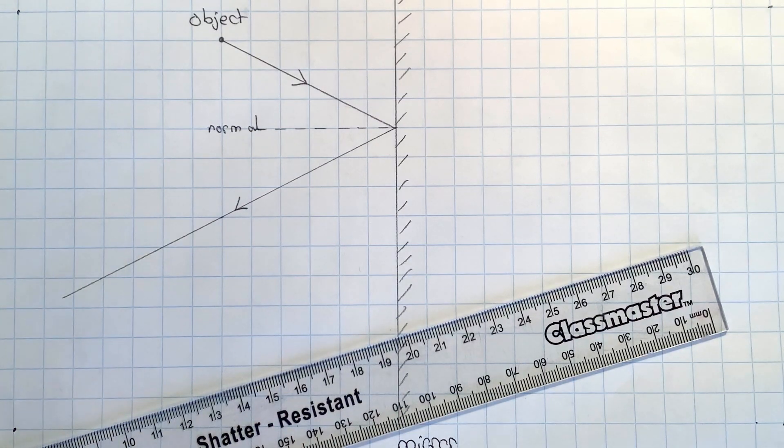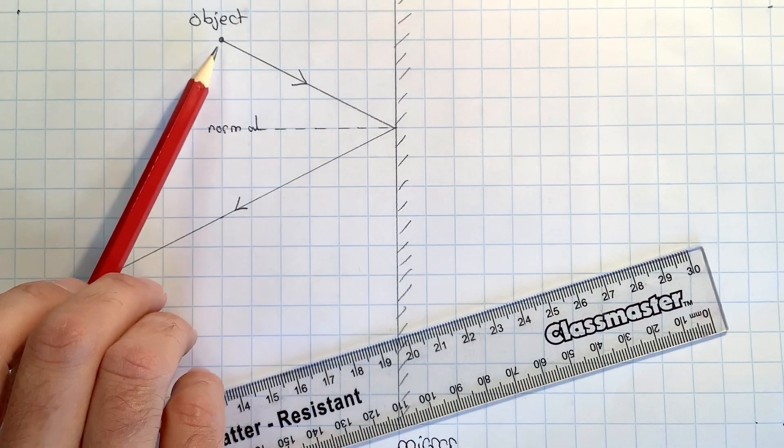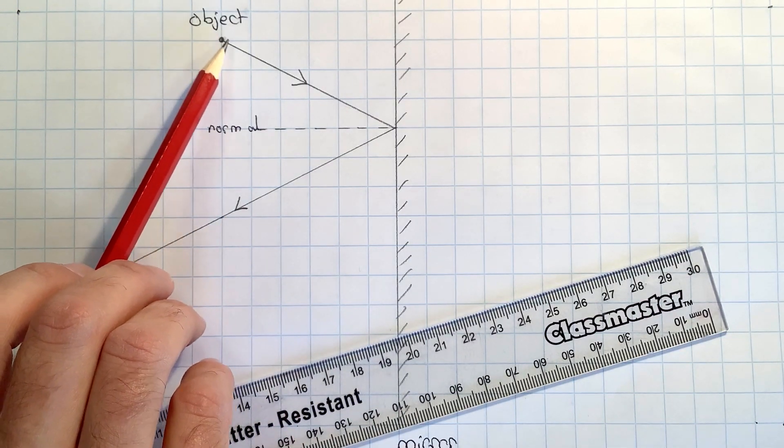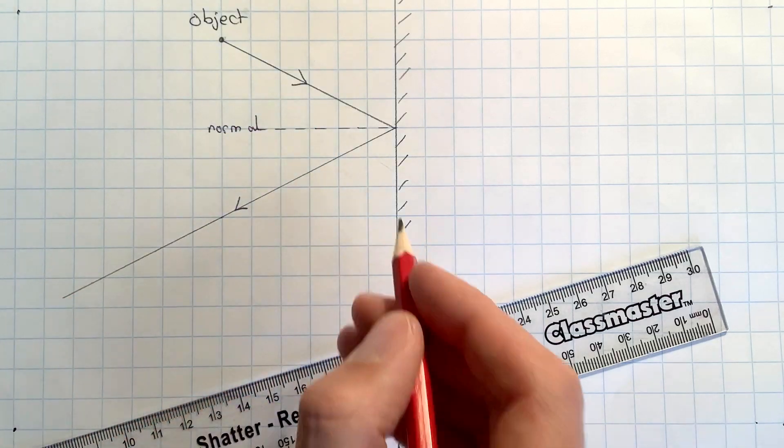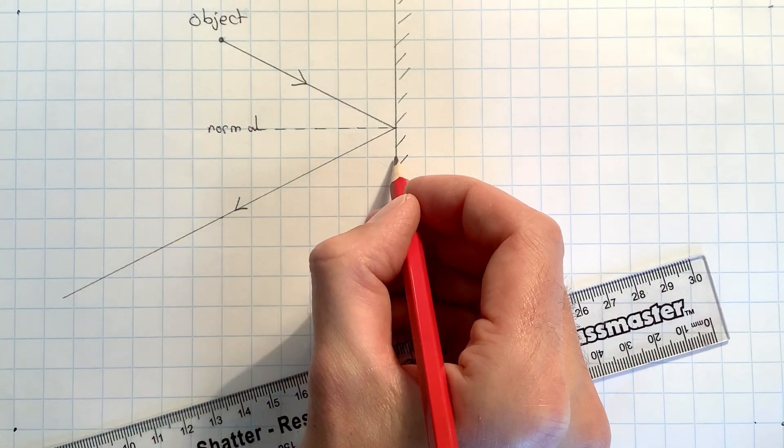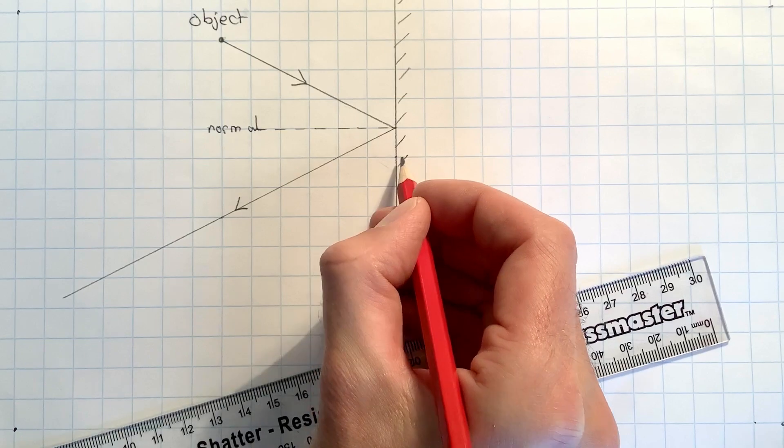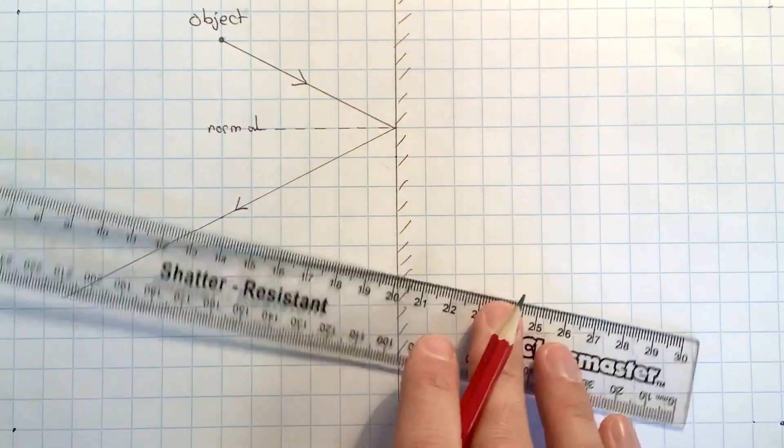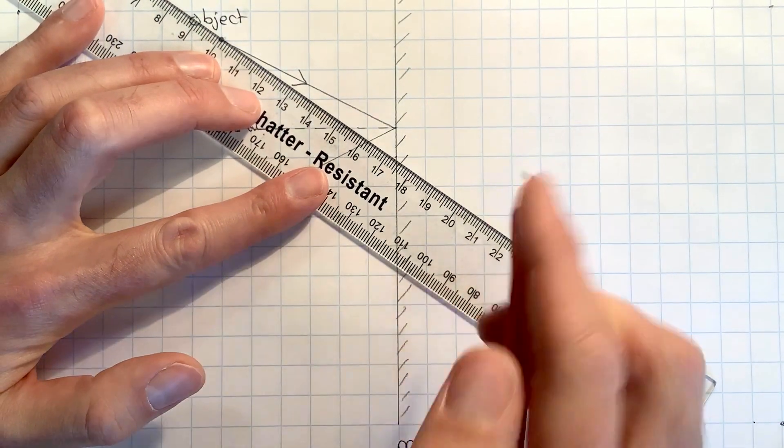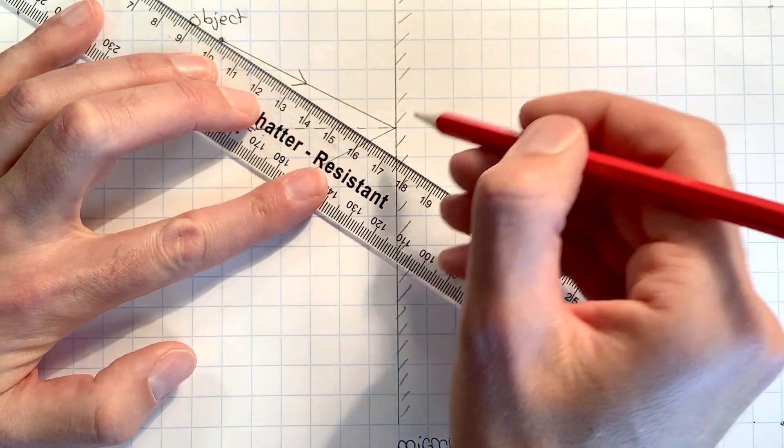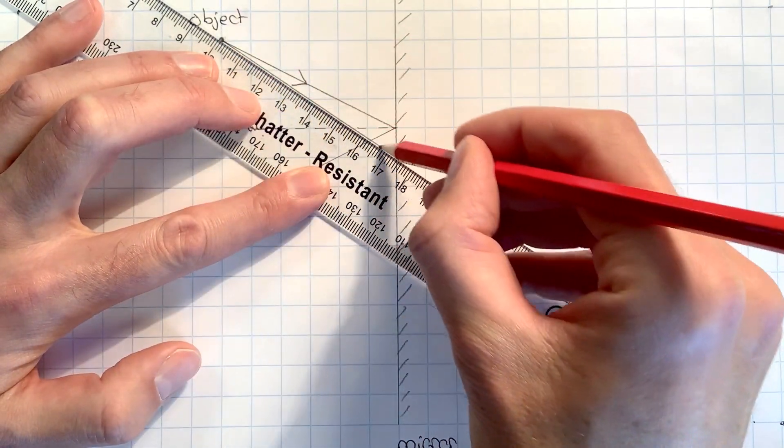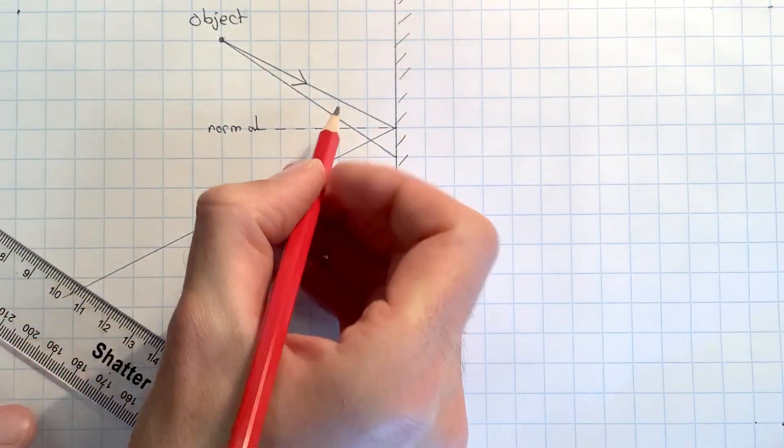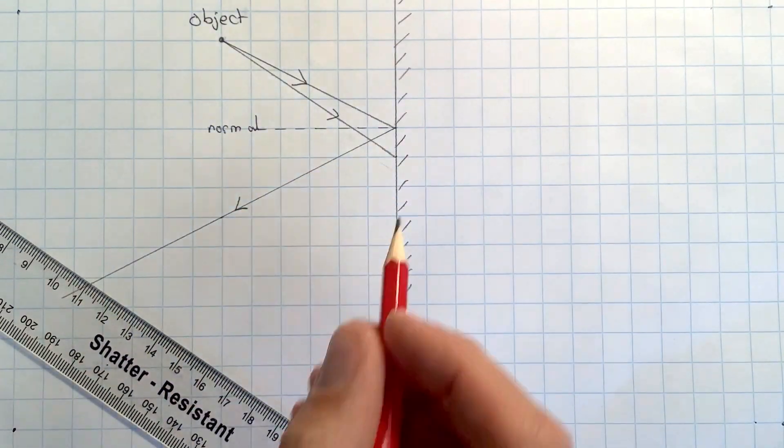I'm now going to do exactly the same process again but for another ray coming from the object and hitting the mirror. This time I'm going to make it hit one further square down so it will have gone four squares down. I'm going to draw that incident ray in.